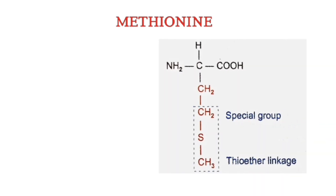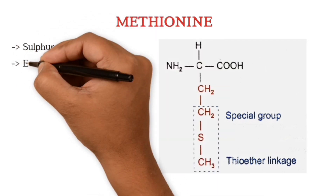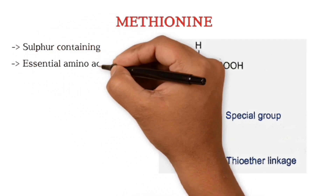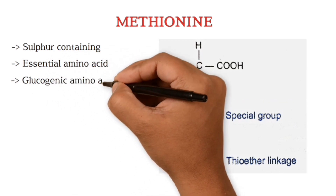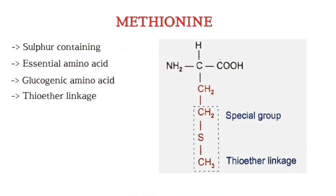We will start with methionine. This is the structure of methionine. It is a sulfur containing, essential, glucogenic amino acid having thioether linkage. This thioether linkage of methionine is not very reactive because the sulfur atom is already bonded to two carbon atoms, forming a stable and non-reactive structure.